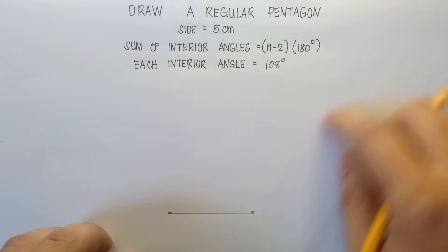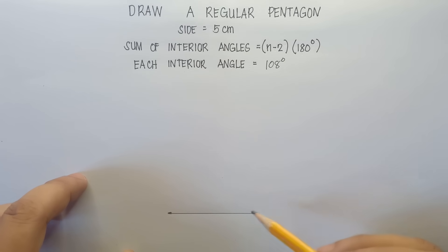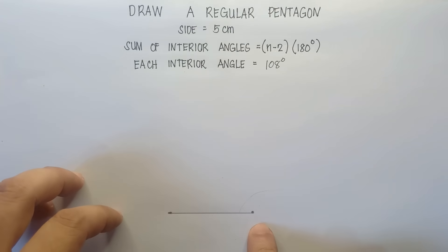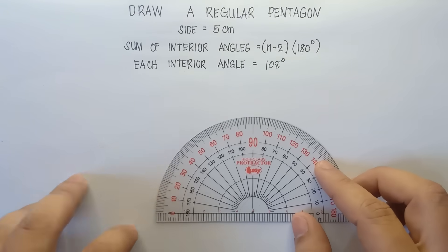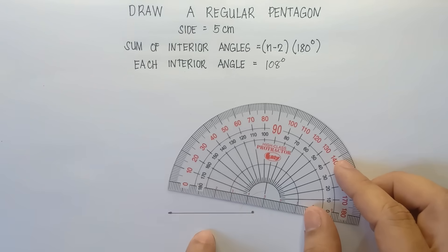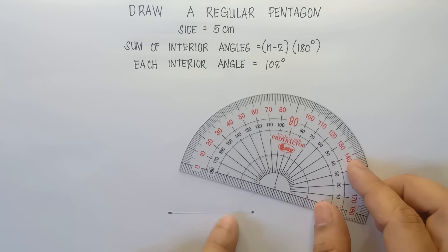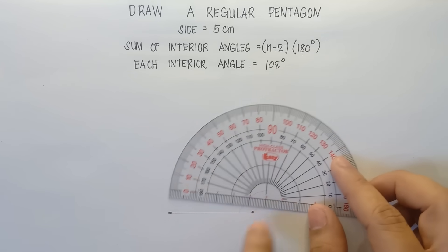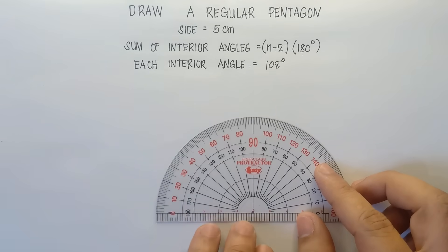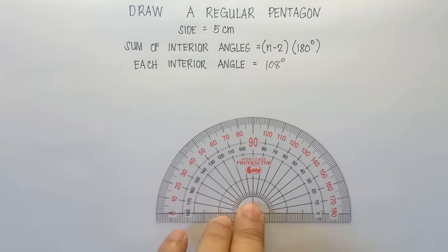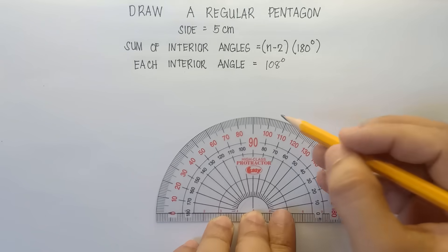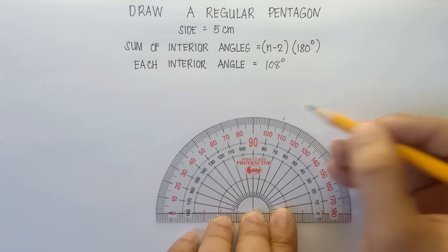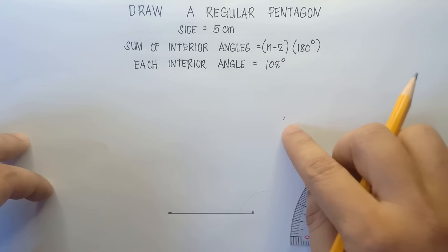Now next step is to draw another side. You need to find the angle — that is 108 degrees. We will use the protractor from this last point. You put this point on the center part of the protractor, and align 0 with this particular line. Then measure out to 108 degrees — counting 10, 20, 30, 40, 50... we have 110, 109, 108. And this will be our guide for the angle.